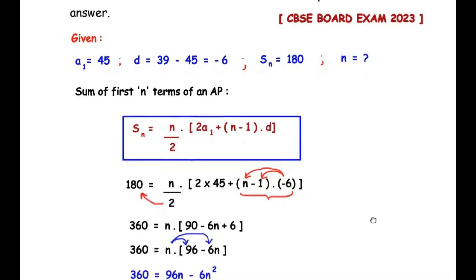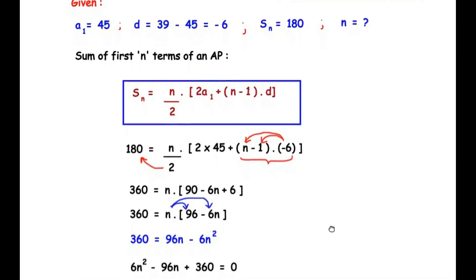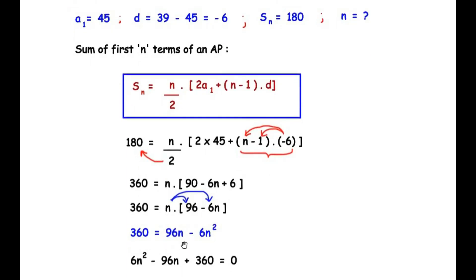So in the next step we have: 360 = 96n − 6n². Now let us take these two terms to the left-hand side. −6n² becomes +6n², +96n becomes −96n, and +360 stays as it is, all equal to zero. So we have: 6n² − 96n + 360 = 0.